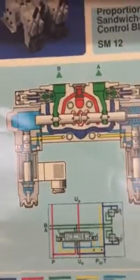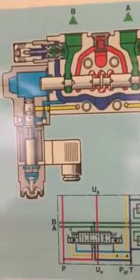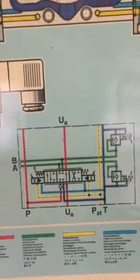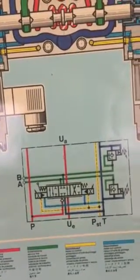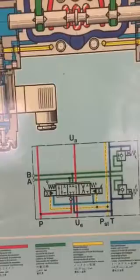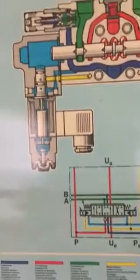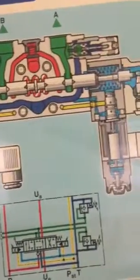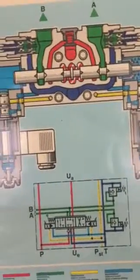So it's a complete block — that's why we call it a sandwich block, mobile control block, proportional sandwich mobile control block. We need to understand the function and application of the proportional sandwich mobile control block: its internal functions and internal structure.